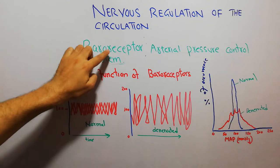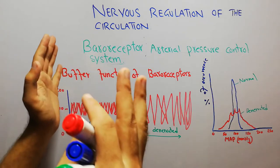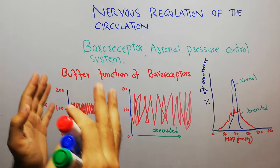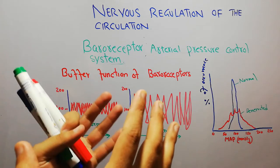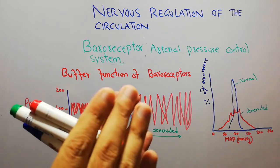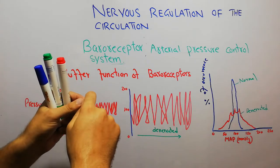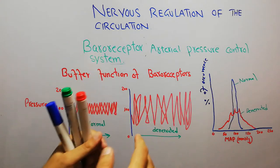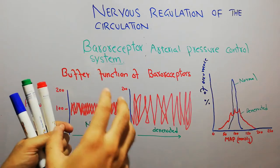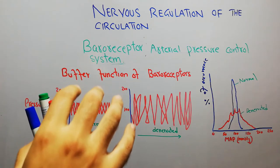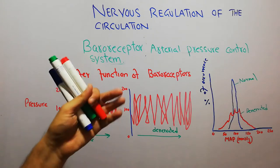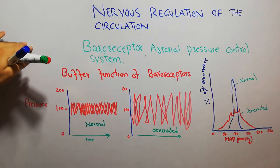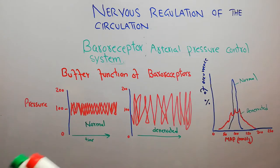Previously we have discussed that baroreceptors are basically present in the aortic arch and carotid bifurcation in the carotid sinus, and they basically detect stretch in the blood vessel. When the pressure increases in the blood vessels, these receptors are stretched. Due to the stretch, signals go to the brain, and the brain then sends signals back and takes action accordingly — if arterial pressure has increased, the brain tries to bring the pressure down, and if the pressure has gone down, the brain tries to improve it through different mechanisms.